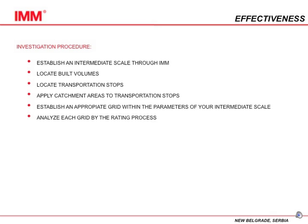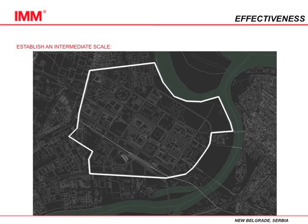The investigation procedure consists of establishing an intermediate scale through IMM, locating built volumes, locating transportation stops, applying catchment areas to transportation stops, establishing an appropriate grid within the parameters of your intermediate scale, and analyzing each grid by the rating process.